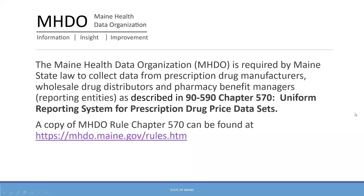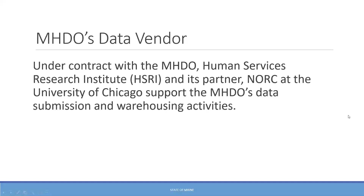For those of you that may be new to this, the Maine Health Data Organization is a state entity in Maine, required by Maine state law to collect data from prescription drug manufacturers, wholesale drug distributors, and pharmacy benefit managers, as described in the rule called 90-590 Chapter 570. A copy of that rule is found at the link on the slide. Our data vendor is Human Service Research Institute, HSRI, and they partner with NORC at the University of Chicago, supporting our data submission and warehousing activities.